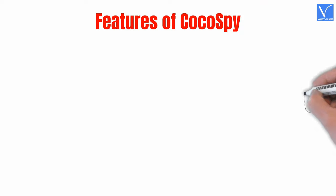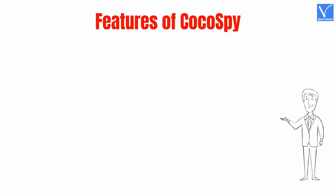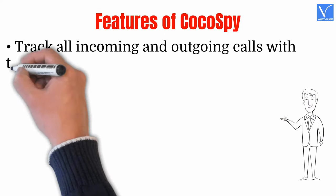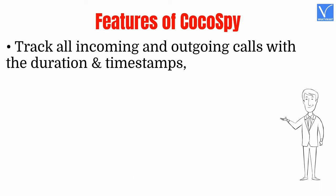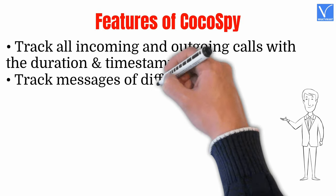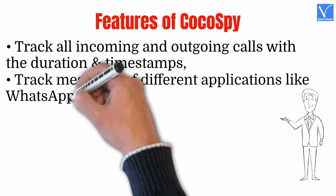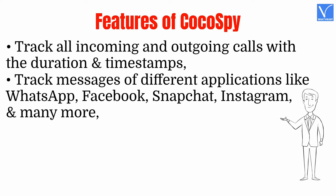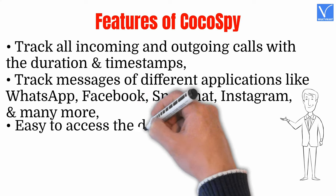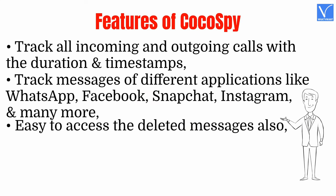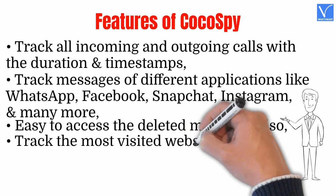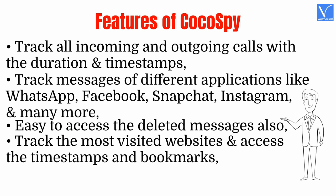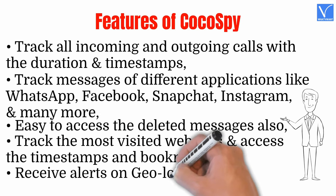Features of Coco Spy: Track all incoming and outgoing calls with the duration and timestamps. Track messages of different applications like WhatsApp, Facebook, Snapchat, Instagram, and many more. Easy to access the deleted messages also. Track the most visited websites and access the timestamps and bookmarks. Receive alerts on geolocations.